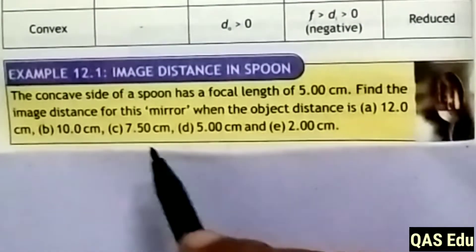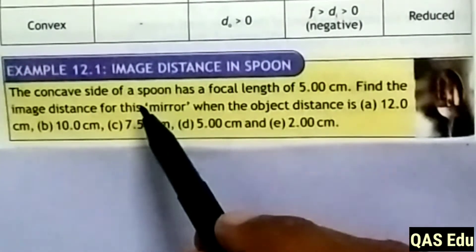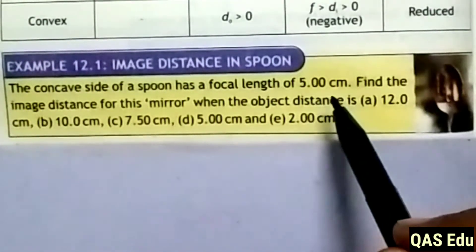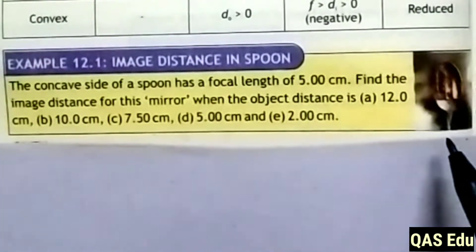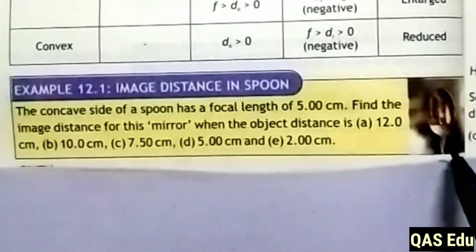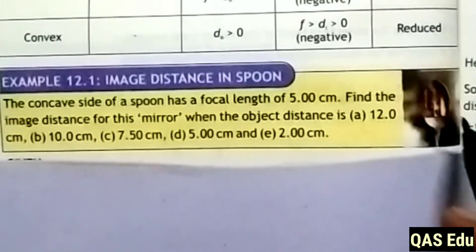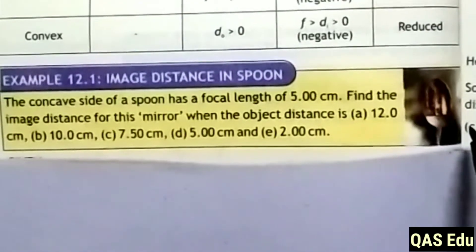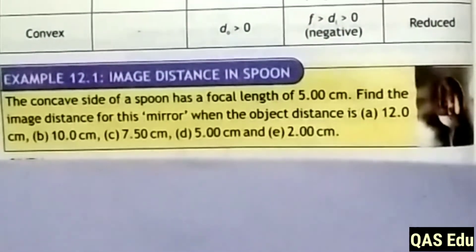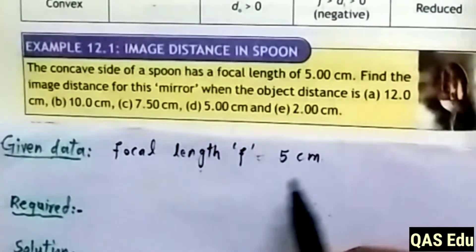Bismillah ar-Rahman ar-Rahim. Example 12.1: The concave side of a spoon acts as a concave mirror with a focal length of 5.00 cm. The outward side of the spoon is a convex mirror, also with a focal length of 5.00 cm.